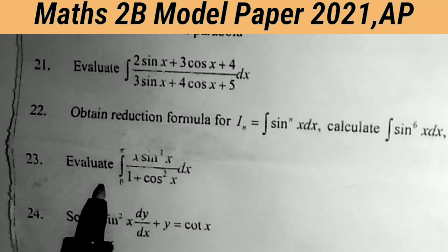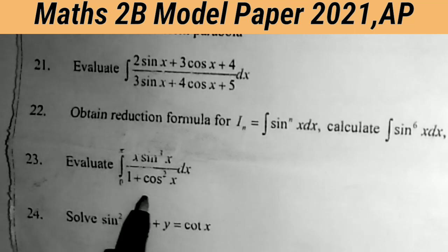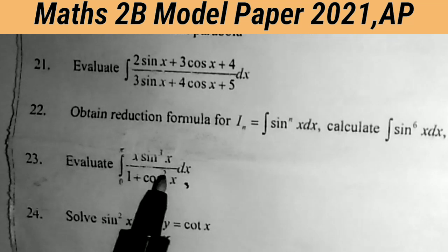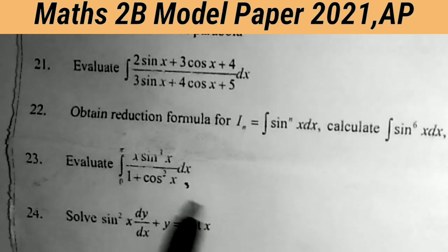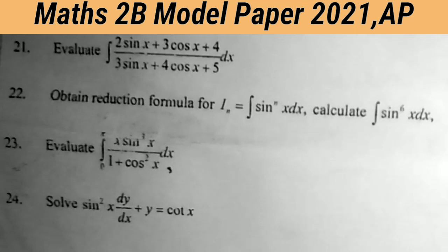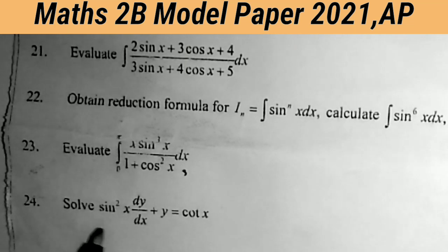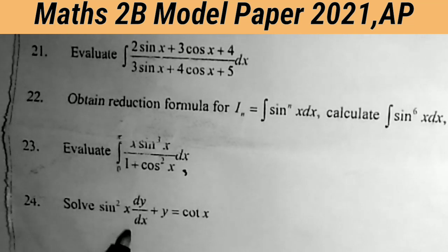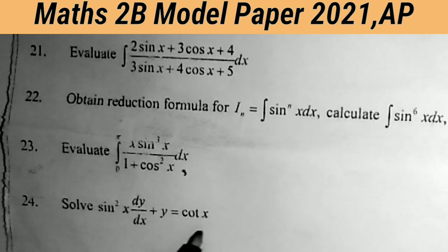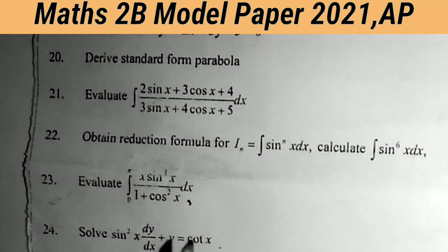Twenty-third question: evaluate the integral from 0 to π of x·sin³x/(1 + cos²x) dx. This is the most important essay question for 7 marks from definite integration. Twenty-fourth question: solve sin²x · dy/dx + y = cot x. This is a linear differential equation.